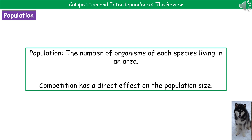If you remember from our previous review, population is the number of organisms of a species that live in an area. When we're talking about competition, that has a direct effect on population size. If we've got a large amount of food available in an area, the population size will increase because there's food for all of them and they will all have enough to survive. If, however, the amount of food was very limited, then some individuals within the population wouldn't get the food they needed, and the population would decrease. Those organisms that are best adapted to that particular environment are more likely to outcompete those less well adapted.